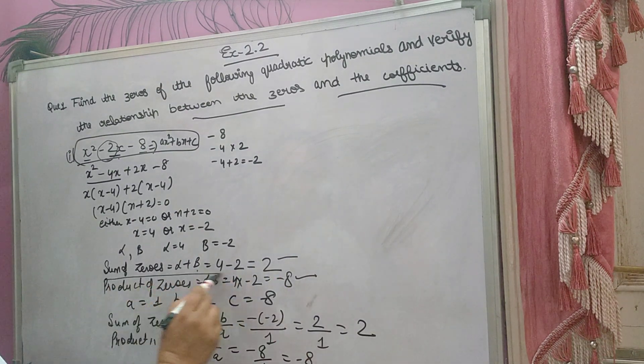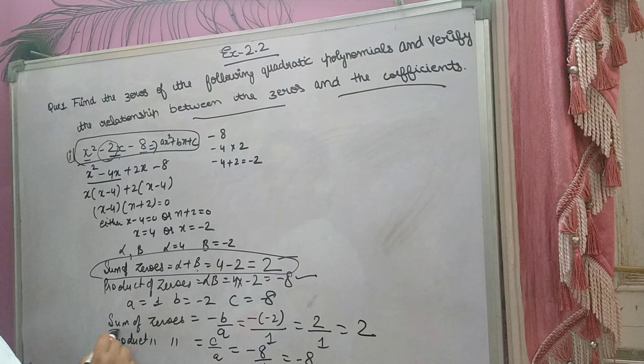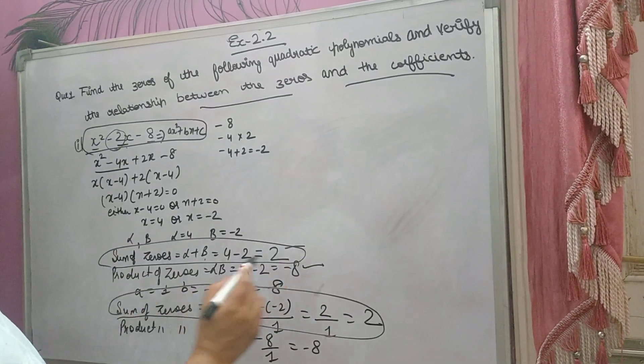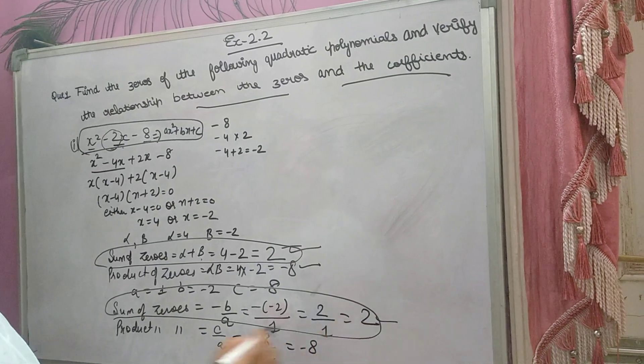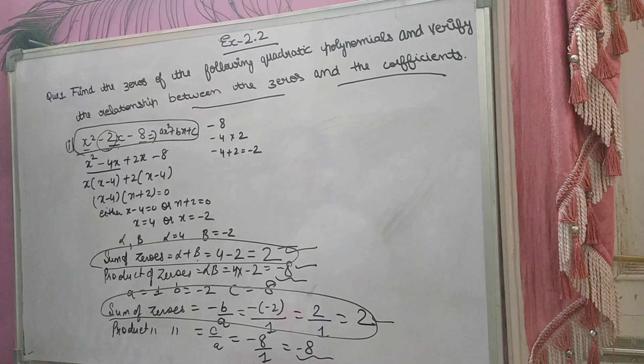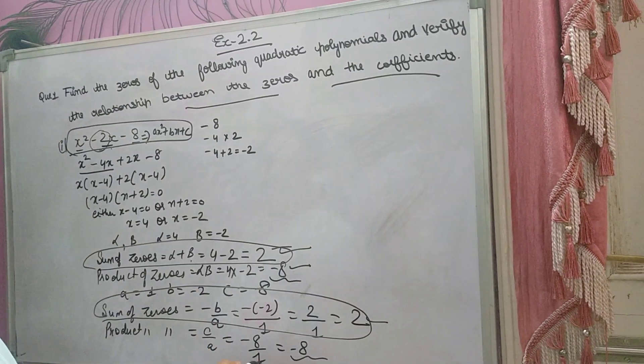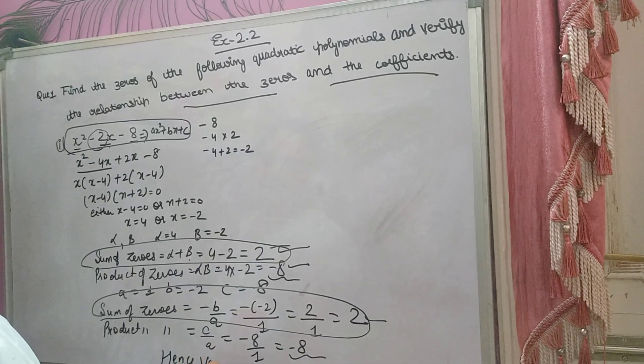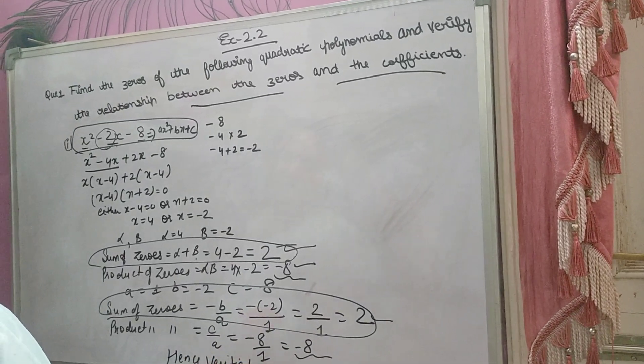Now see, sum of zeros here came 2, and here also came 2. So both are same. Now product of zeros here came minus 8, here also came minus 8. And this only you have to verify. So you will write hence verified. Thank you.